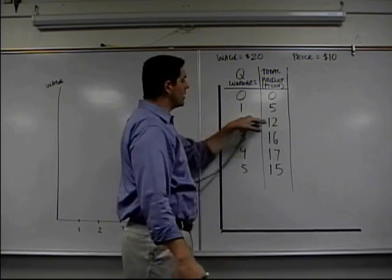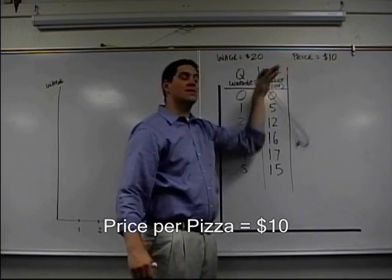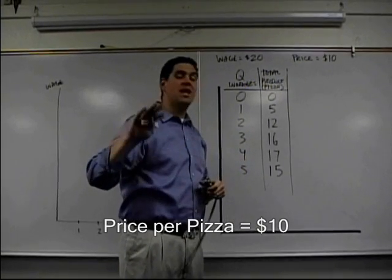Over here is the total amount of pizza. One cook can make five, two together can make twelve, three can make sixteen. Up here the wage is twenty, and the price I can sell each one of these pizzas for is ten bucks a piece.